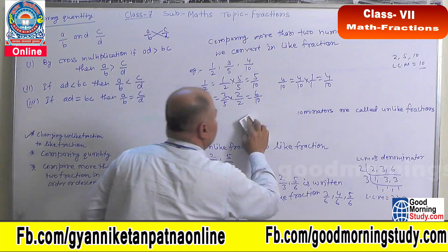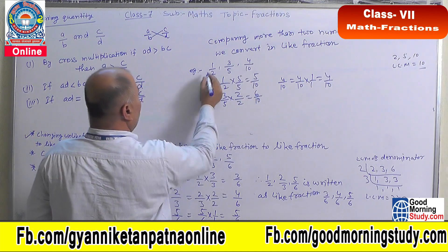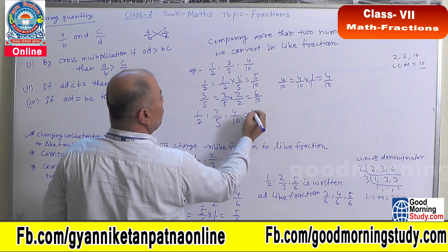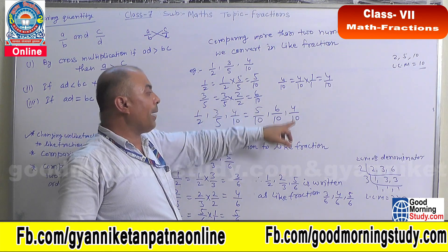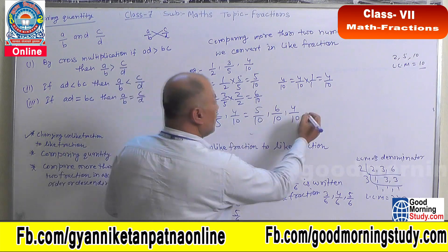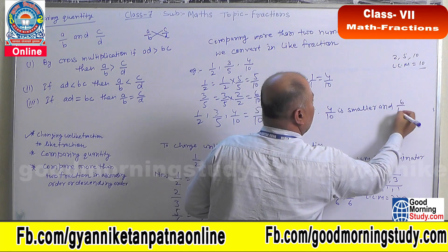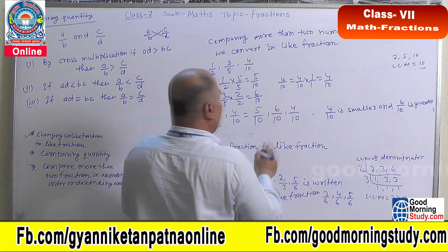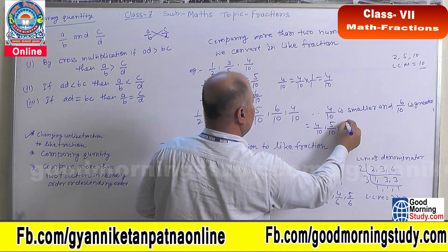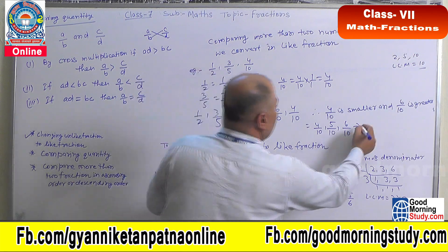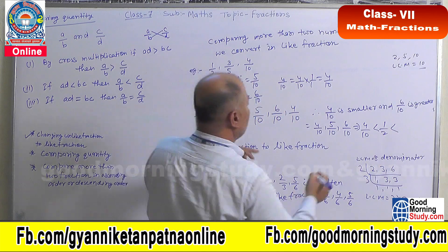So 1 by 2, 3 by 5, and 4 by 10 are written as like fractions: 5 by 10, 6 by 10, and 4 by 10. We can see that 4 by 10 is the smallest and 6 by 10 is the greatest. In ascending order, these are written as: 4 by 10 (which is 4 by 10), then 5 by 10 (which is 1 by 2), then 6 by 10 (which is 3 by 5).